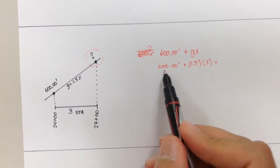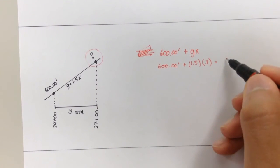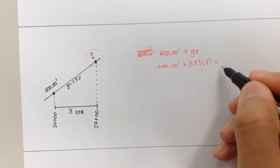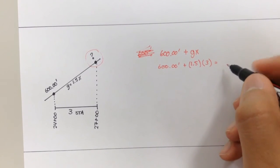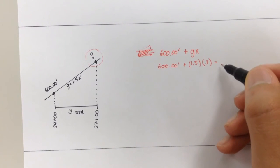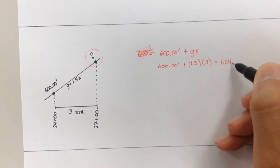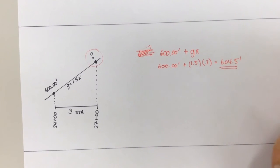All right, just elevation plus GX, if we go left to right, right? So 600 plus 1.5 times three is 604.5 feet. Simple, right?